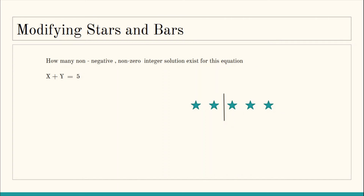To stop getting a solution where a variable has value zero, we must ensure that no two bars are next to each other in any configuration. So we have two restrictions: first, no bar should be completely at the leftmost or rightmost position; second, no two bars should be adjacent to each other. If we keep these two restrictions in mind, the only valid places to put bars are those that ensure all regions have at least one star.